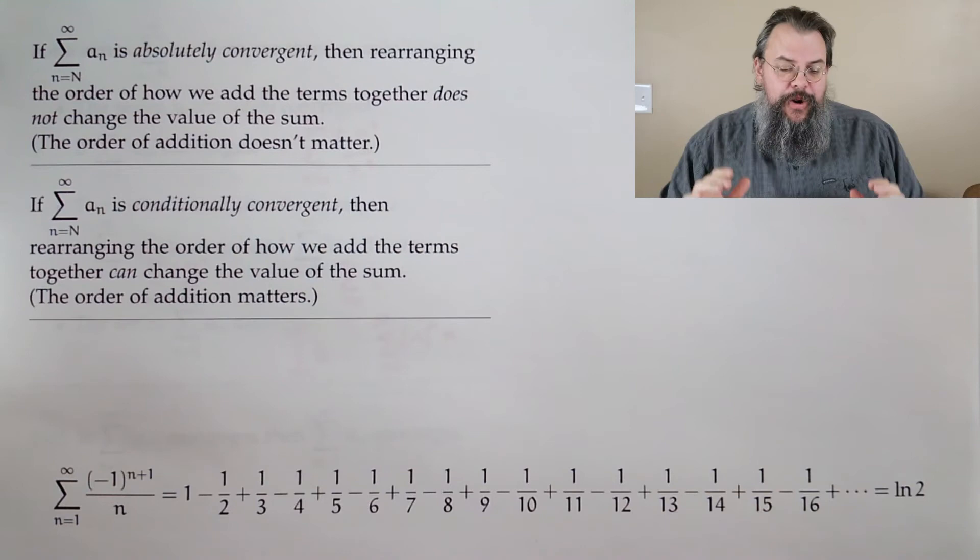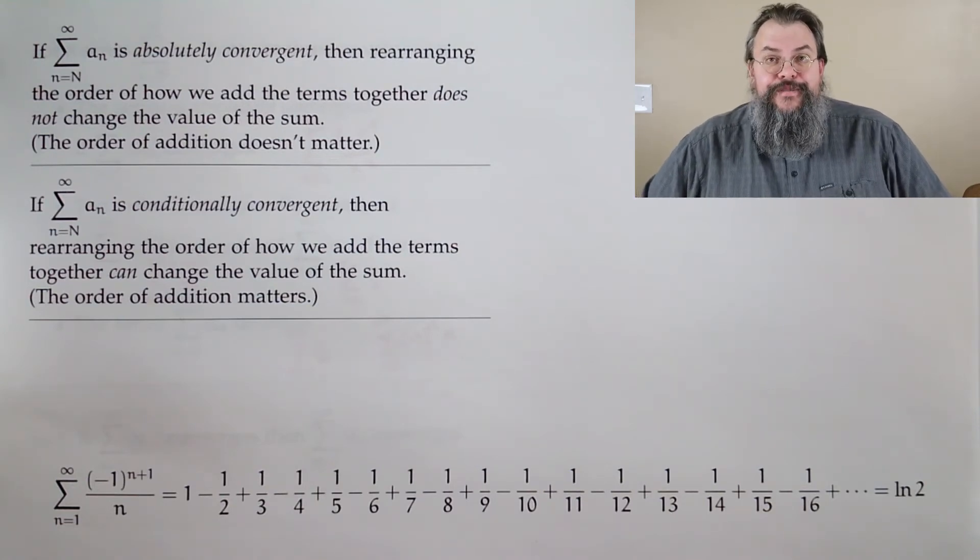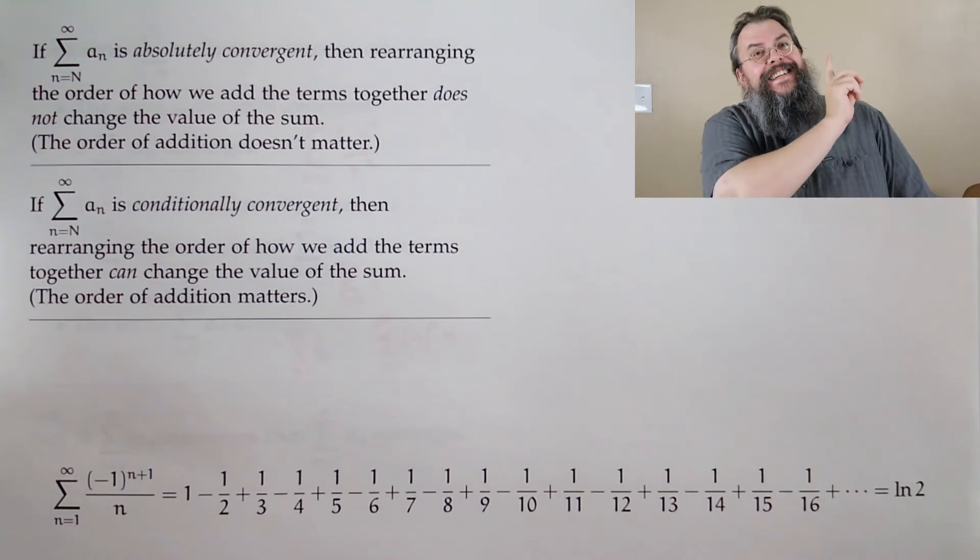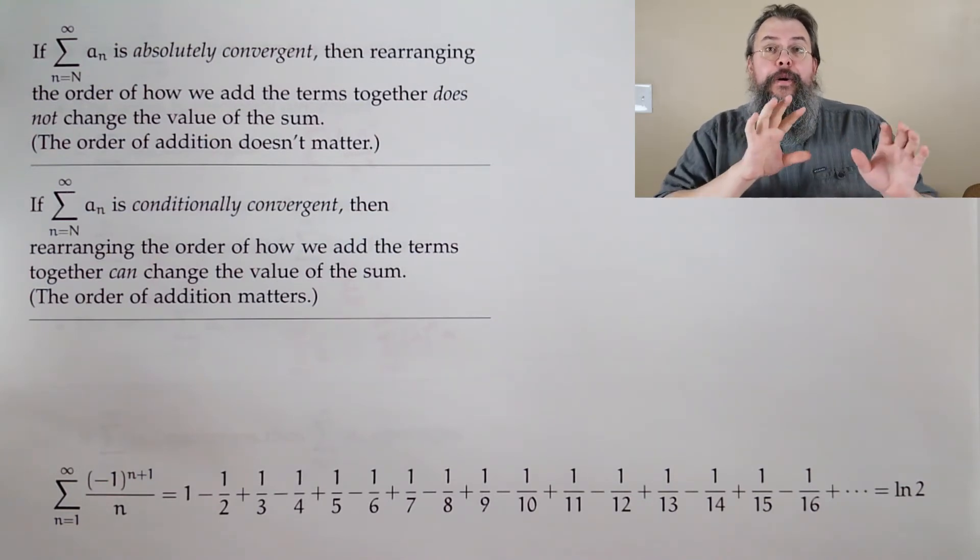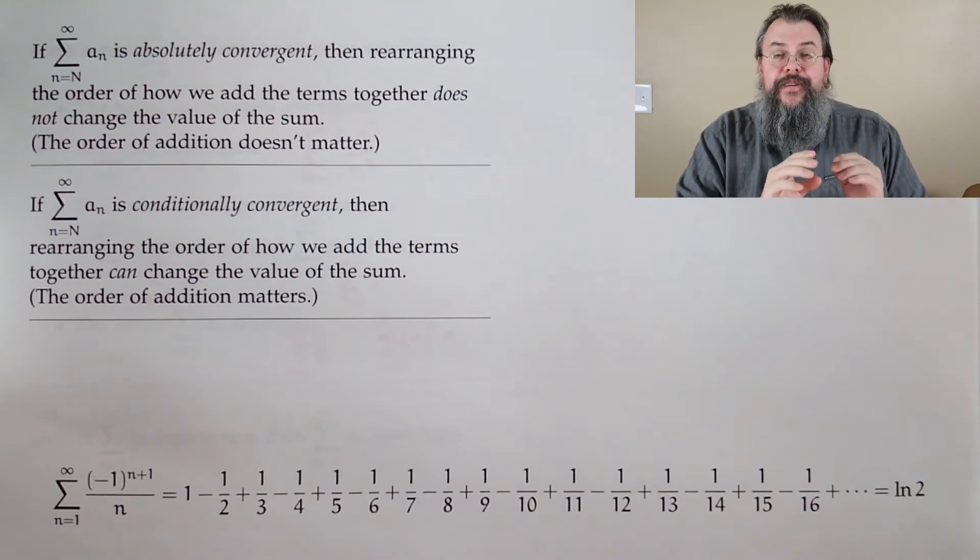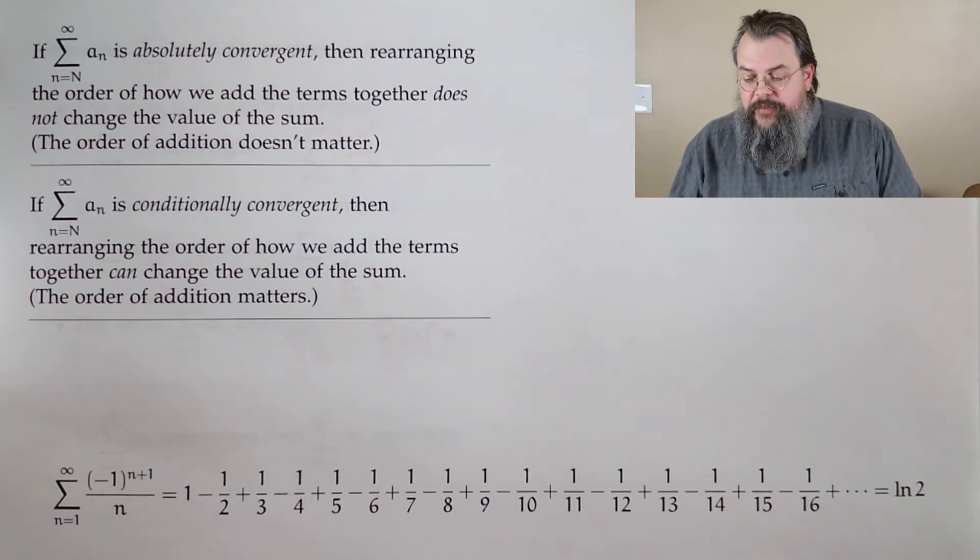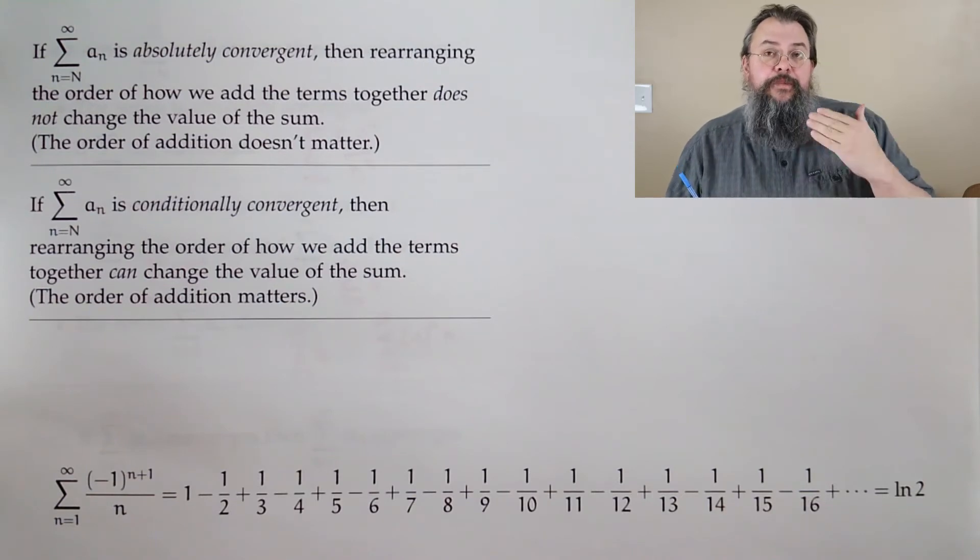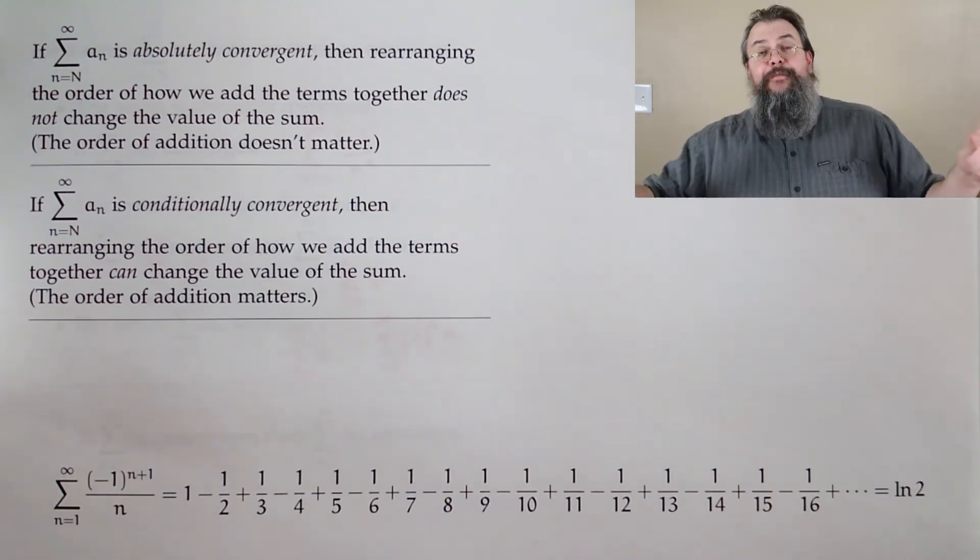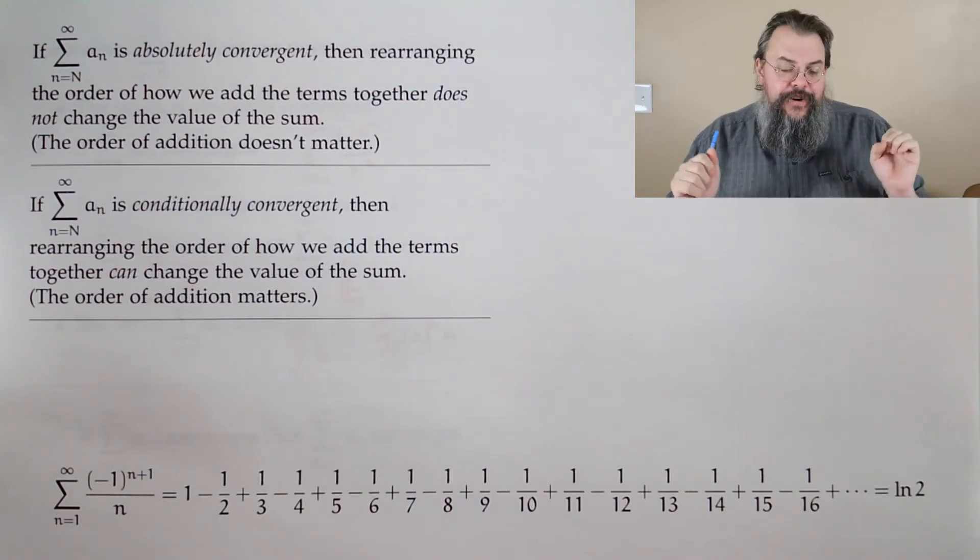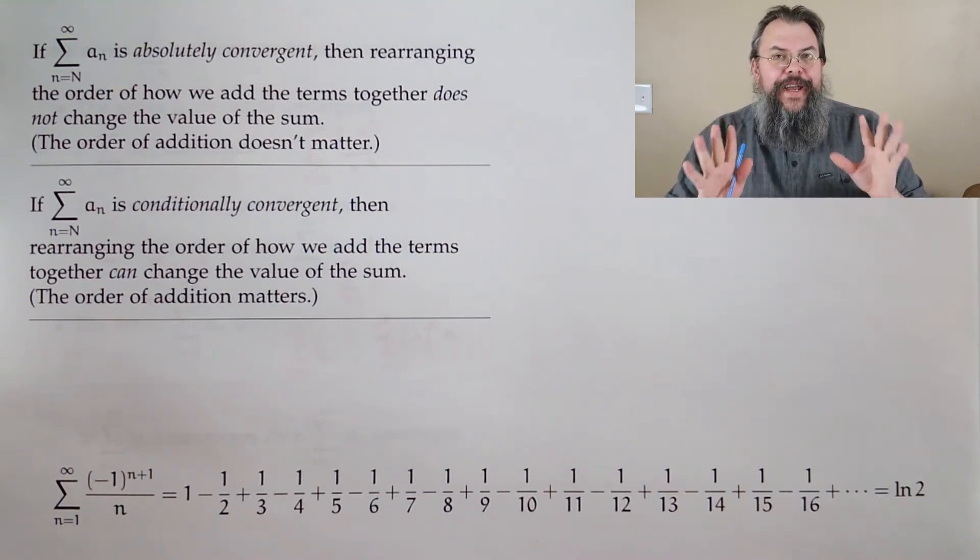This agrees with what we think should be true. We're like, yeah, of course. Come on. Don't be silly. It should never matter how we add numbers. But, this is the fun part, if we're conditionally convergent, then, by rearranging the way that we add things, it can change the output. And, in fact, it gets even stranger than that. Not only can we change the output, we can make the value be literally any number that we want. And so, that's why conditional convergence is really, really weird. Because it sort of breaks our way of thinking about addition.